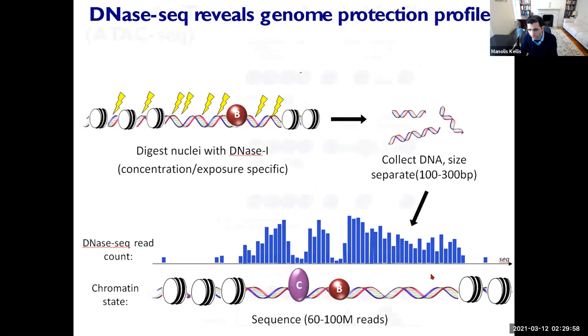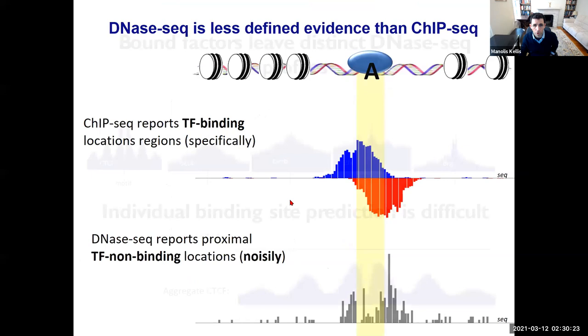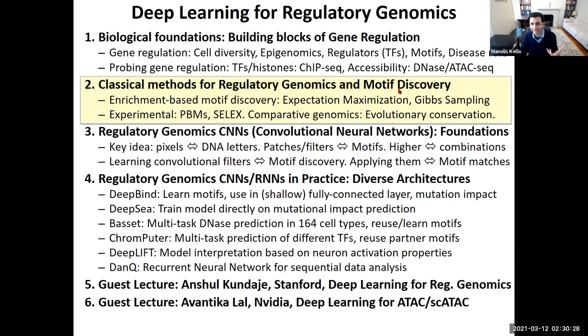The third technology is ATAC-seq, which also captures accessible chromatin but uses Tn5 transposases. You introduce Tn5 transposases into the genome — wherever they incorporate, they leave a mark. You capture all those marks and sequence them, giving another way to measure DNA accessibility. With ChIP-seq and accessibility assays, we can discover the language of DNA.